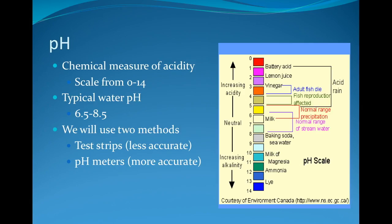pH is a chemical measure of acidity, typically ranging from 0 to 14. Water found in Ohio can range from 6.5 to 8.5. There are two methods used to measure pH: test strips, which are less accurate, and pH meters, which are much more accurate.